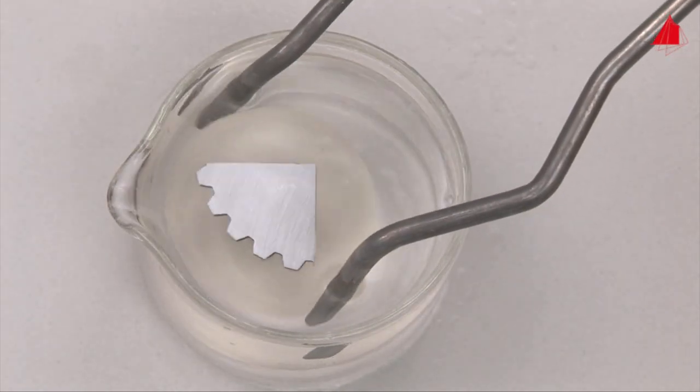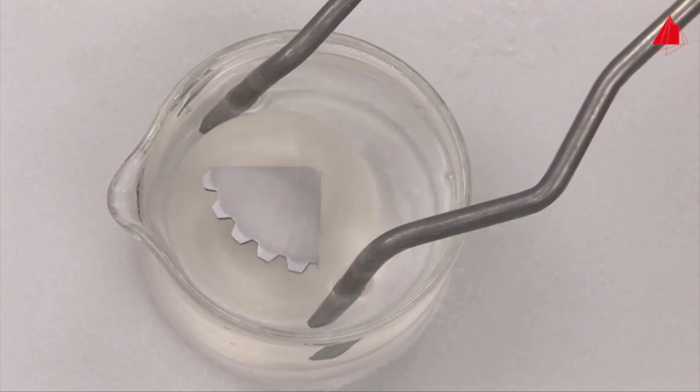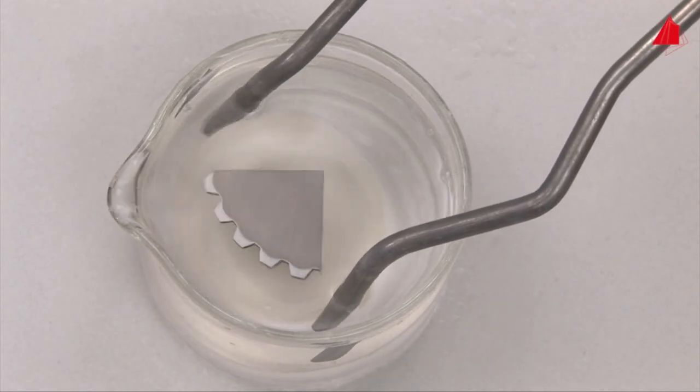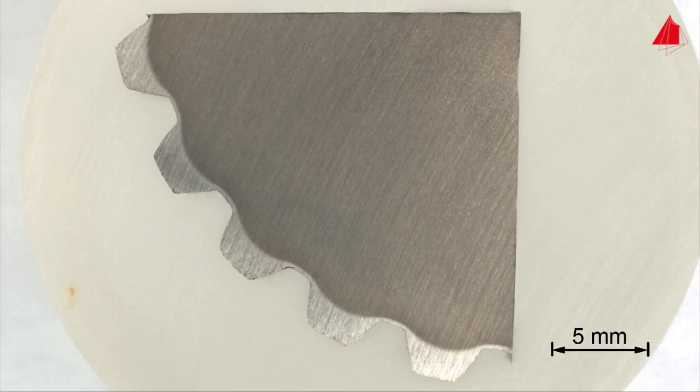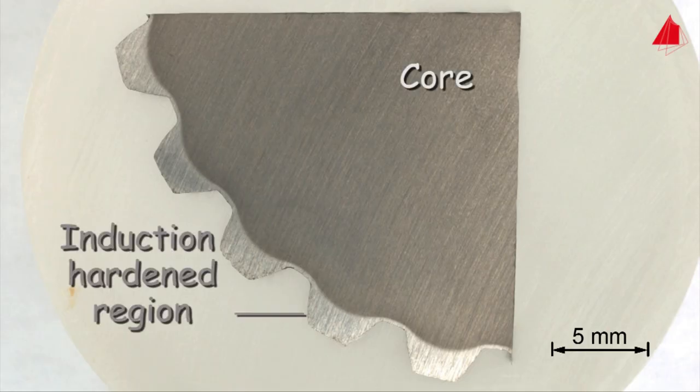This section of a splined shaft is induction-hardened as well. As a result of the etching process, the outline of the hardened surface layer may easily be recognized. The dark area represents the core that has not been hardened.